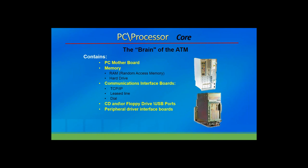The PC processor is the brain of the machine. It has a motherboard, RAM memory — random access memory — and a hard drive for long-term storage. RAM is very volatile; what the PC does is take data from permanent storage on the hard drive, load it into RAM, and that's what you work on while running the computer or ATM. When you reboot, you're simply clearing the RAM and starting over with a fresh load from the hard drive. Communications interfaces include TCP/IP, leased line, and dial-up. Media drives like CD, floppy, or DVD are used, though many ATMs now just include USB ports, plus peripheral driver interface boards that act as the interface to all peripherals.